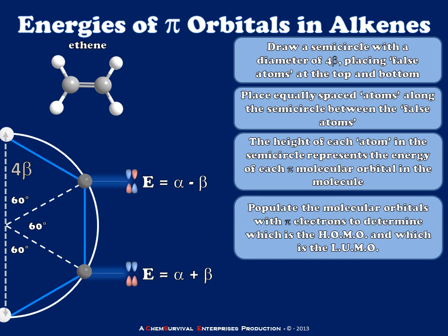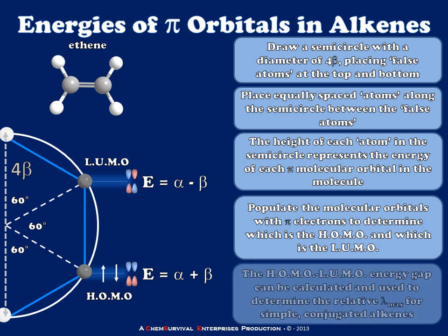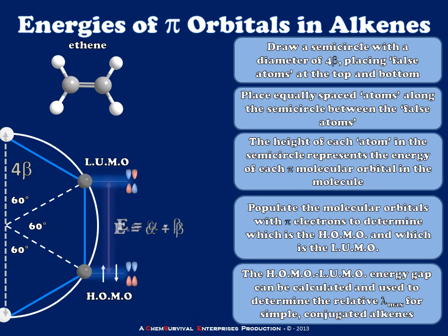In the second step, I determine which is the HOMO and which is the LUMO by adding the two pi electrons to the chart. This is relatively simple for ethene since there are only two orbitals, but it becomes more complex for larger systems. To get the energy gap between the HOMO and LUMO, I simply subtract one energy from the other, and I can determine that the energy difference is 2 beta.